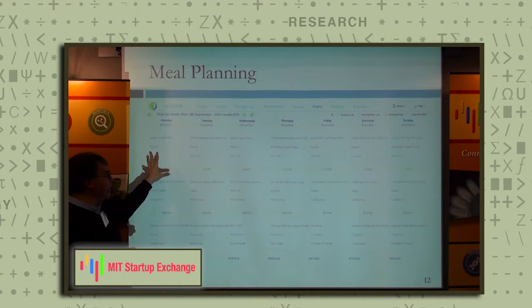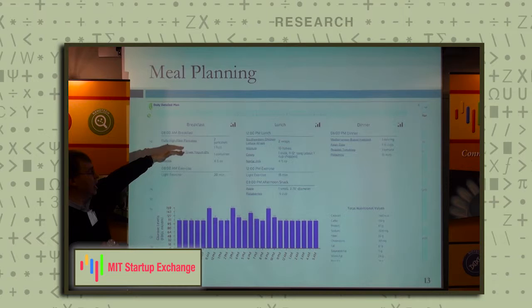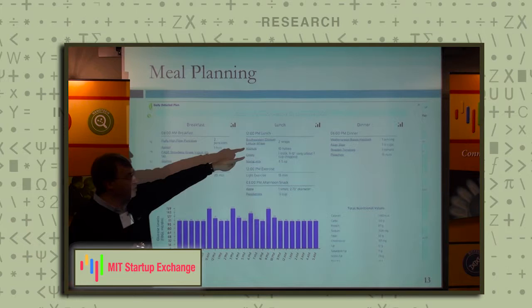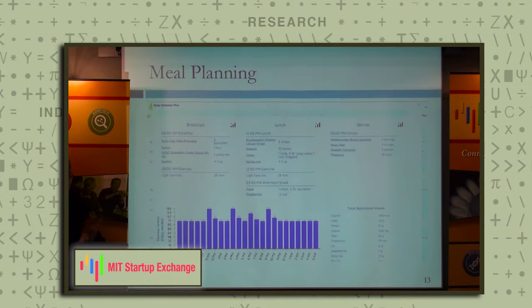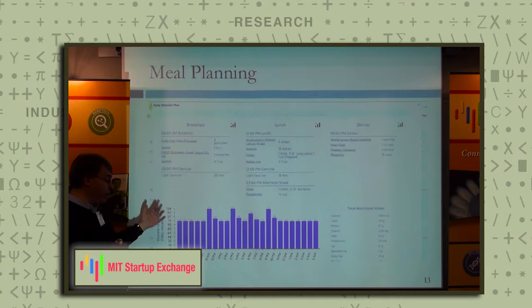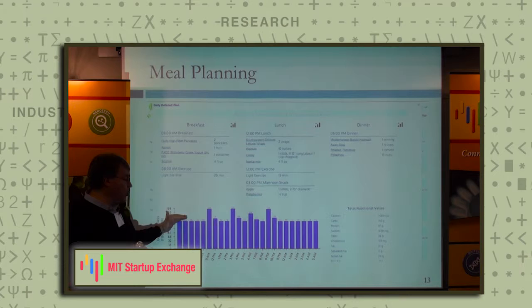To give you more details, for breakfast, it chooses certain things. For lunch, it chooses certain things. It also has exercise at various times. For dinner, certain things. It has some snacks sometimes. For diabetic people, having snacks during the day is good because it decreases the spikes. This is based on what Leah learned from you. It has a prediction of what your glucose would be during the day.